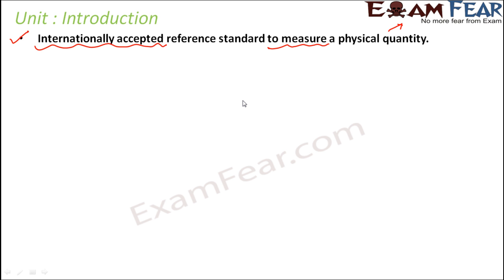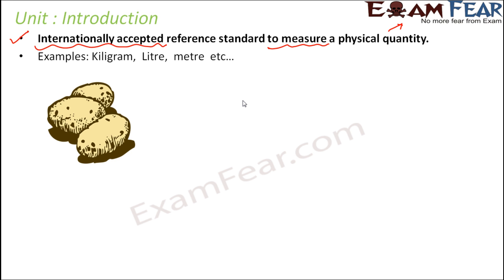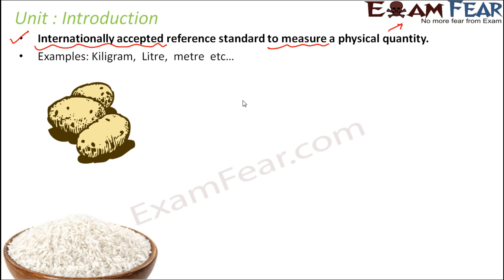Let me give you some examples. Let's say you are sent to the market to buy potatoes, milk, and rice. How will you tell the shopkeeper how much of each you want? You need to specify. There might be a huge amount of potatoes stocked in the shop, but you do not want all of them. When we talk about potatoes, it is still possible to define the amount in numbers — you could tell the shopkeeper you want four potatoes, and you can count them.